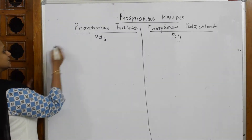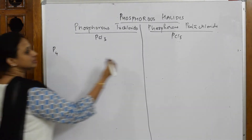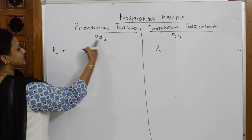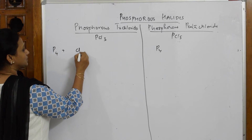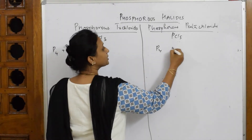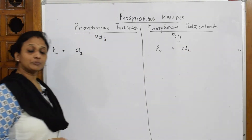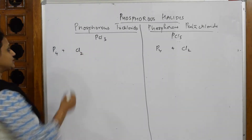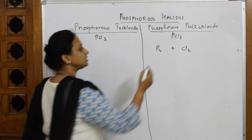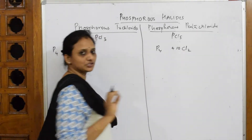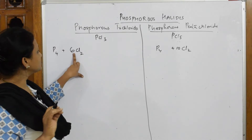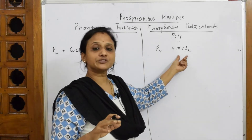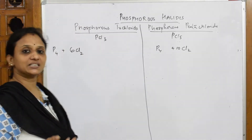Now for the specific preparation: take P4. To prepare PCl3, take 6 moles of chlorine (diatomic). To prepare PCl5, take 10 moles of chlorine. Simple logic for the exam — if they give you 6 moles of chlorine, you are going to form PCl3; if they give you 10 moles of chlorine, you are going to prepare PCl5. Remember this.